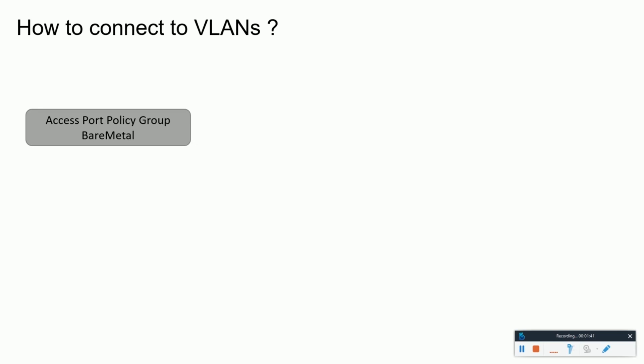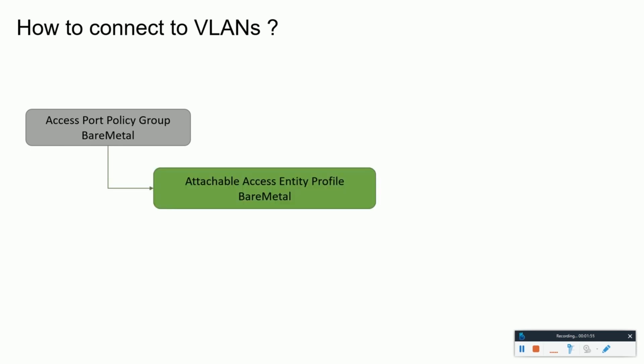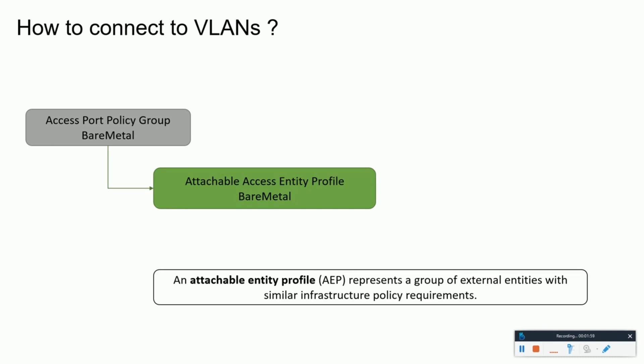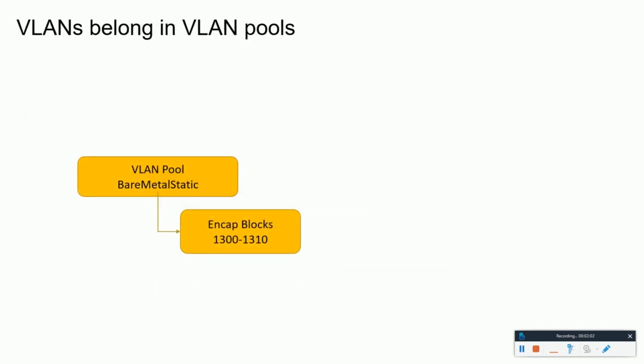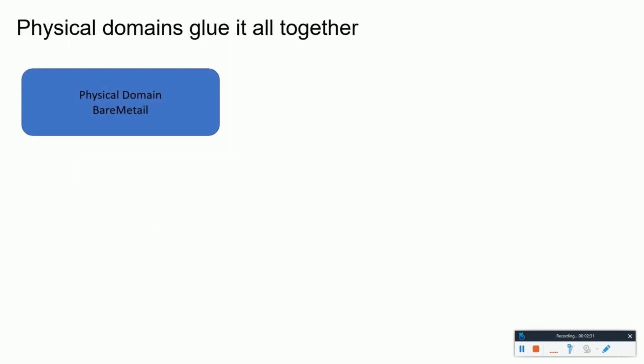Under the interface policy group, when you visit the ACI fabric there is an option to define or map an AEP — the Attachable Access Entity Profile. Next, we have a VLAN pool which mentions the VLAN blocks — the allowed range of VLANs. This is a group of VLANs which, when mapped to an interface, means that this range of VLANs would be allowed on that interface.